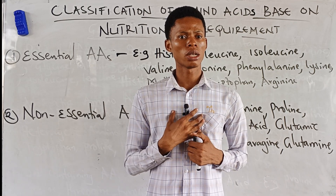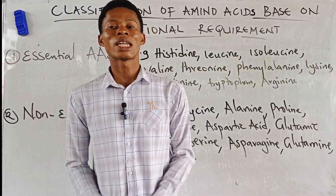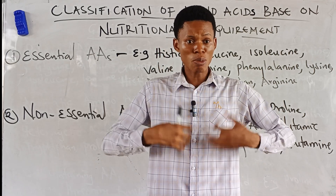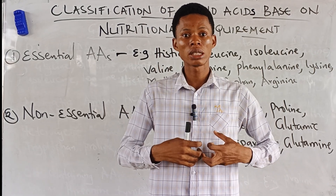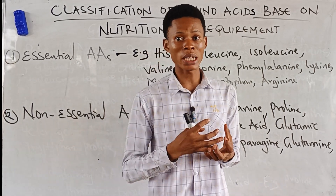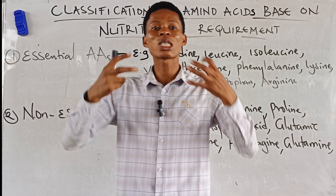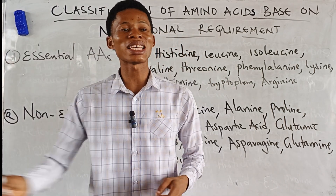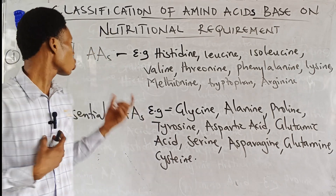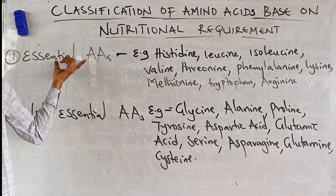The amino acids that cannot be synthesized in your body but are needed must be obtained from an outside source — from the diet. When something is essential, it is important and necessary. So those amino acids that cannot be synthesized by the body are called essential amino acids; it is essential that you get them from your diet.